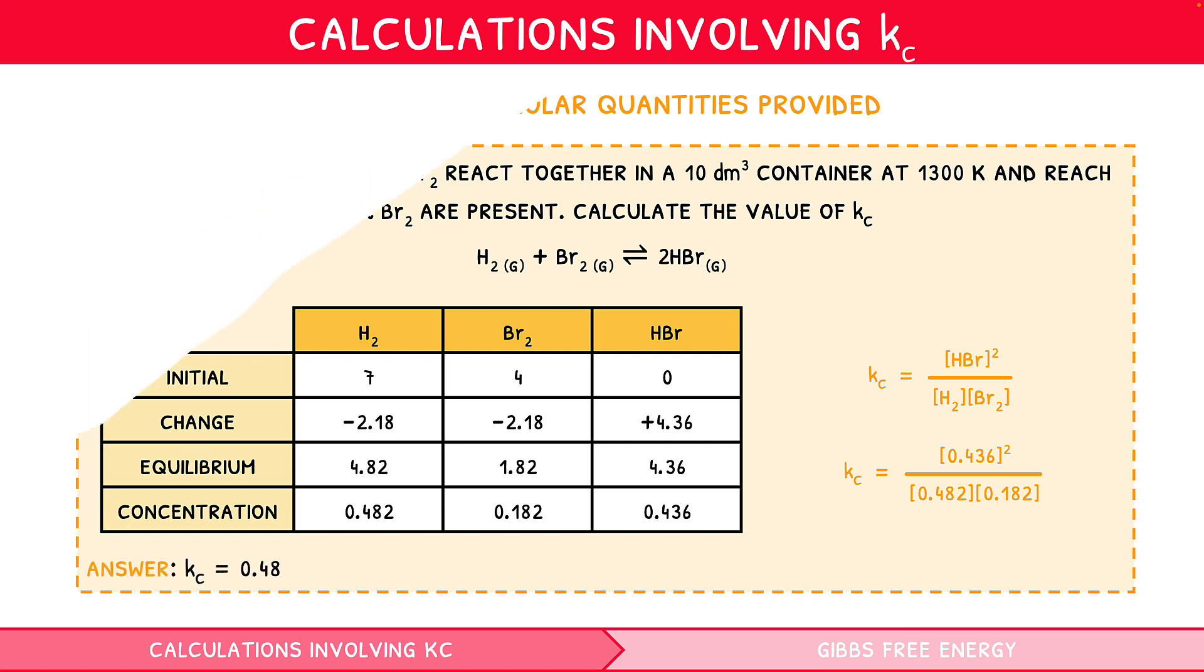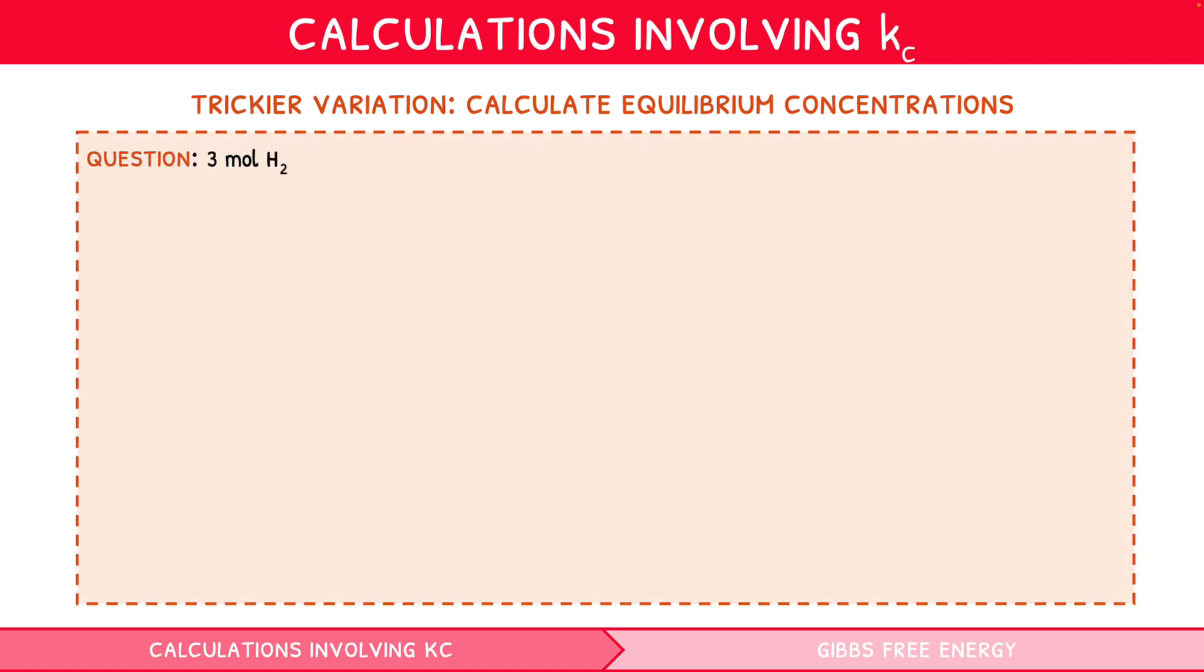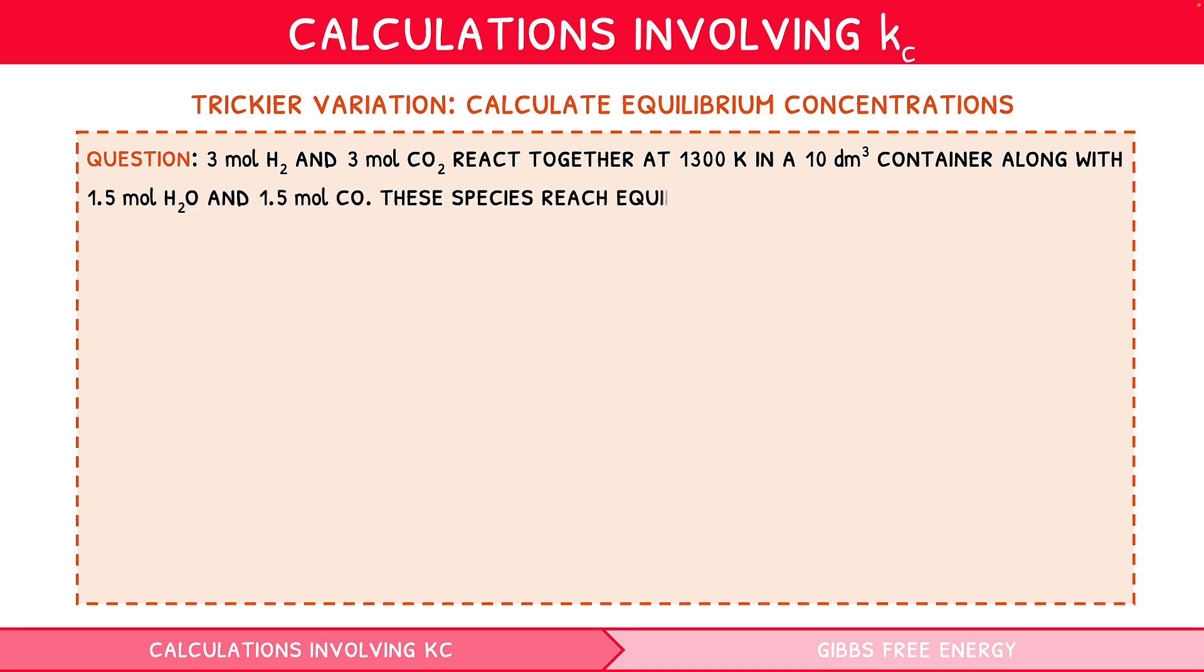Now we have talked you through the easiest format, let's look at the trickier variation. In these, you will be asked to calculate the equilibrium concentrations using provided molar quantities and a value of Kc. For example, 3 mol H2 and 3 mol CO2 react together at 1300 Kelvin in a 10 decimetre cubed container, along with 1.5 mol H2O and 1.5 mol CO. These species reach equilibrium, where Kc is 3.54. Calculate the equilibrium concentrations for all species at 1300 Kelvin.